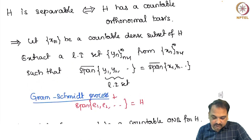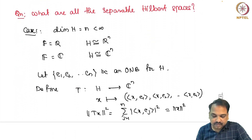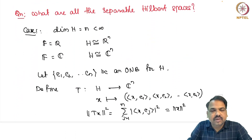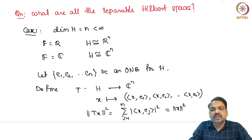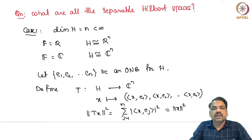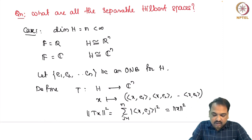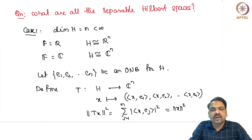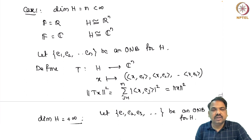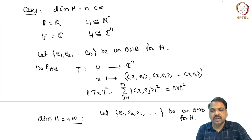Next we can ask: what are all the separable Hilbert spaces? We know R^n and C^n are separable Hilbert spaces. When the dimension of H is finite, say dimension N, we can show there is a one-to-one onto isometric isomorphism from H to R^N or H to C^N depending on the field. Suppose H is an n-dimensional Hilbert space with orthonormal basis E1, E2, ..., En.